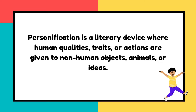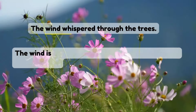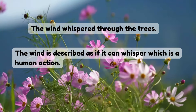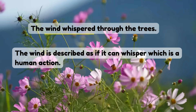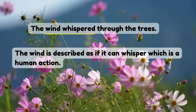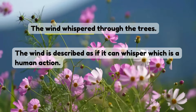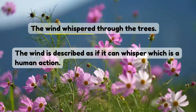Let's understand better by looking at some examples. The first example: the wind whispered through the trees. Here, the non-living object is wind. Wind does not have a life to whisper, so here it's described as if it can whisper, which is a human action.